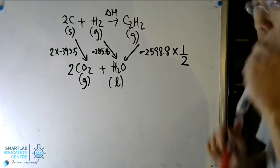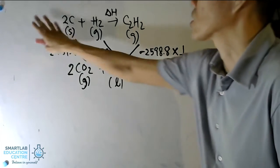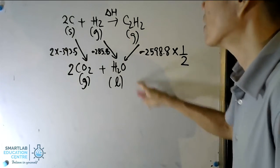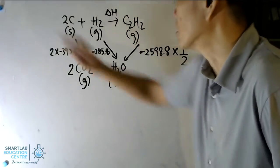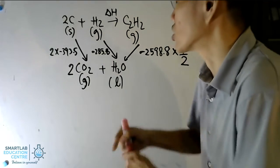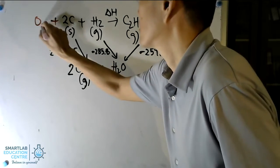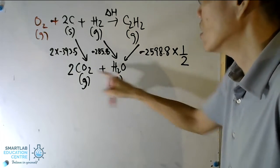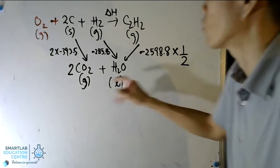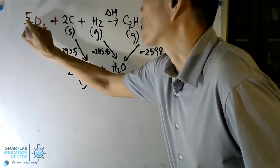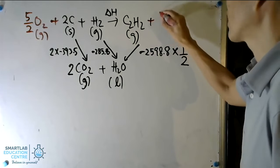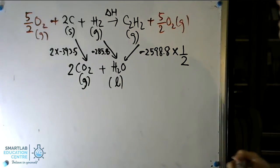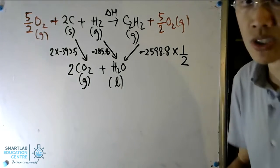Next, we add oxygen molecules on both sides to ensure everything is balanced — the number of atoms at the common point must equal the number at the other point. Carbon is balanced, hydrogen is balanced; counting oxygen gives five on one side, four plus one on the other, so we add 5/2 O2 to balance both sides. That is how you form an energy cycle.